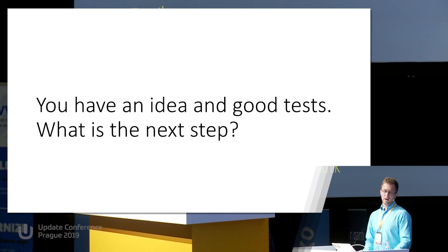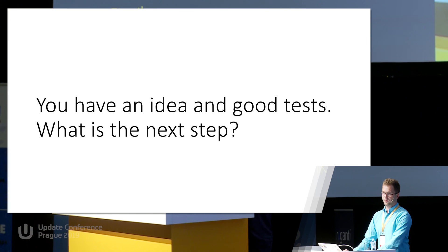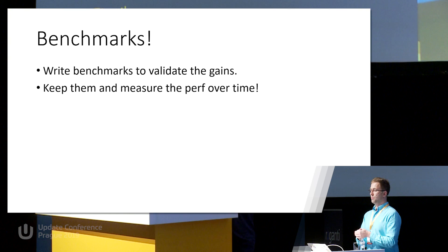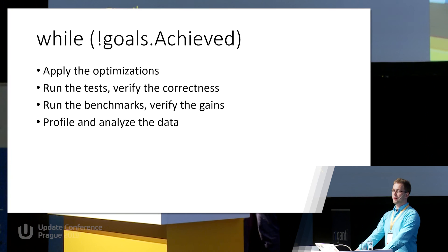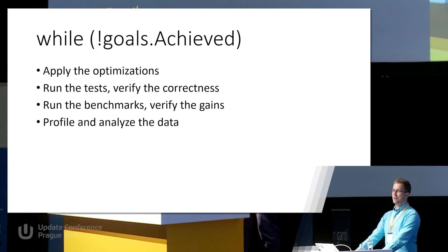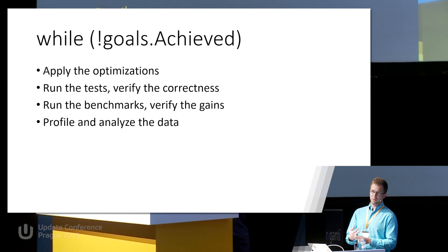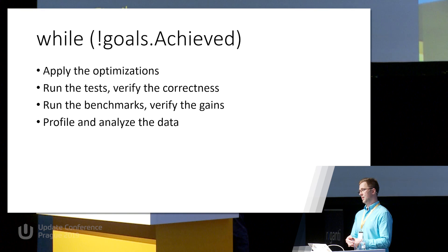Once you have an idea and good tests, the next step is to write benchmarks — they will answer whether your fixes actually improved performance. If you keep them over time, they will also allow you to detect future regressions. Until we're happy with the performance, we apply the optimization, run unit tests to verify we didn't change the behavior, run benchmarks to verify we actually improved performance, and use a profiler to profile and analyze further — improve, improve, improve — until the goal is achieved.